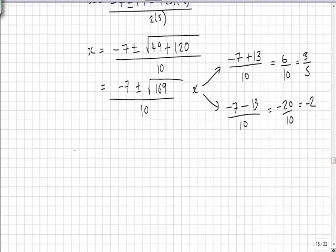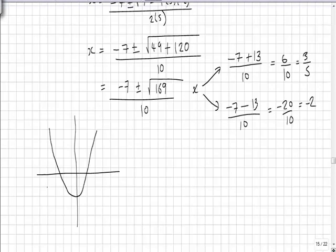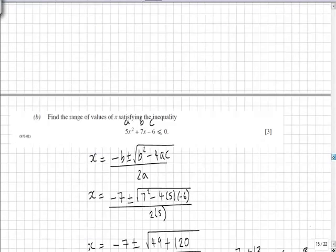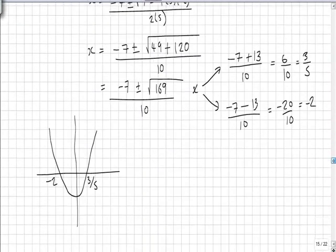Using these values and sketching the curve quickly, we know it's a positive quadratic curve and it cuts the x-axis at minus 2 and 3 fifths.